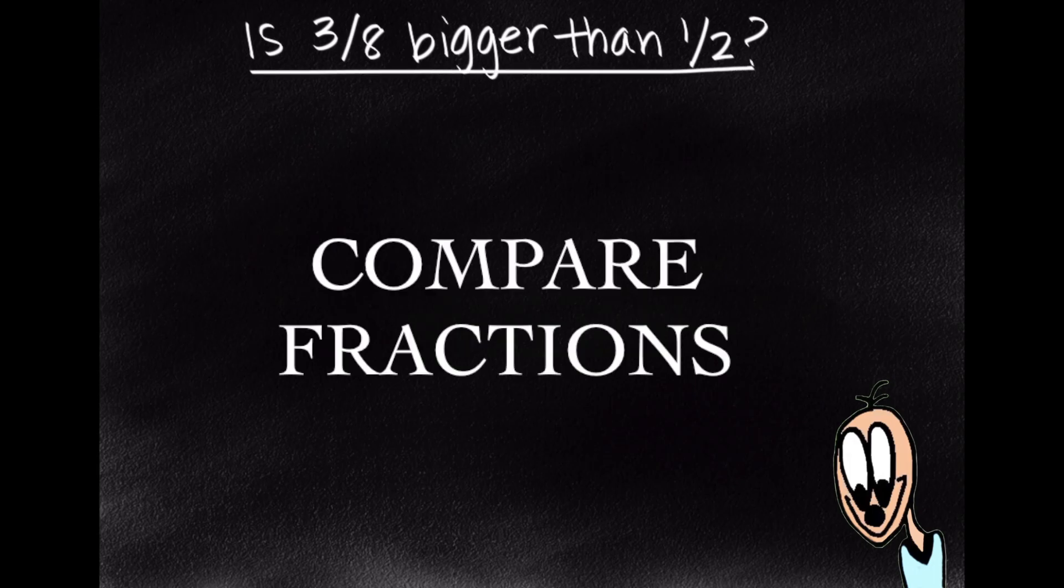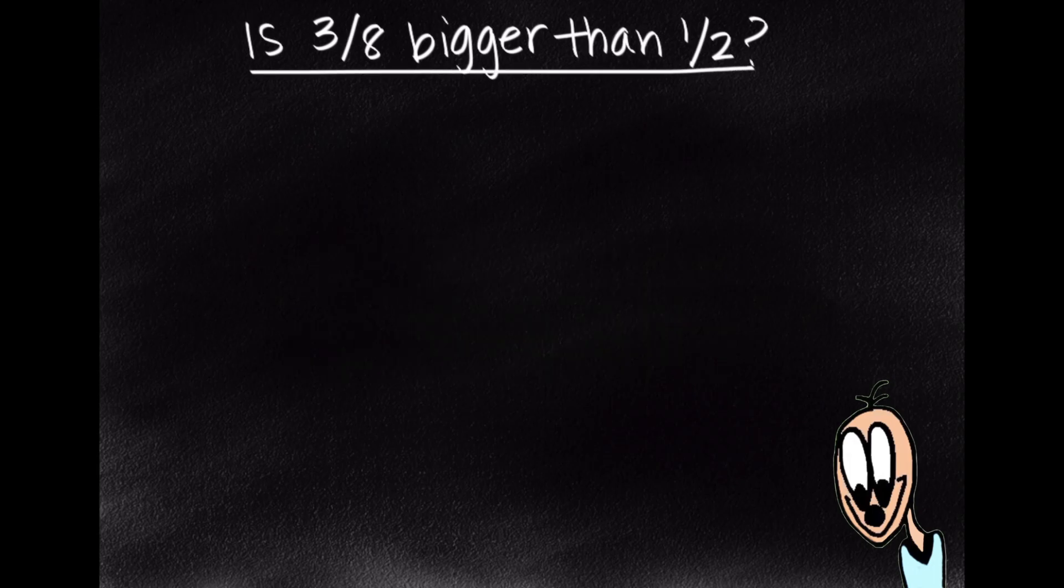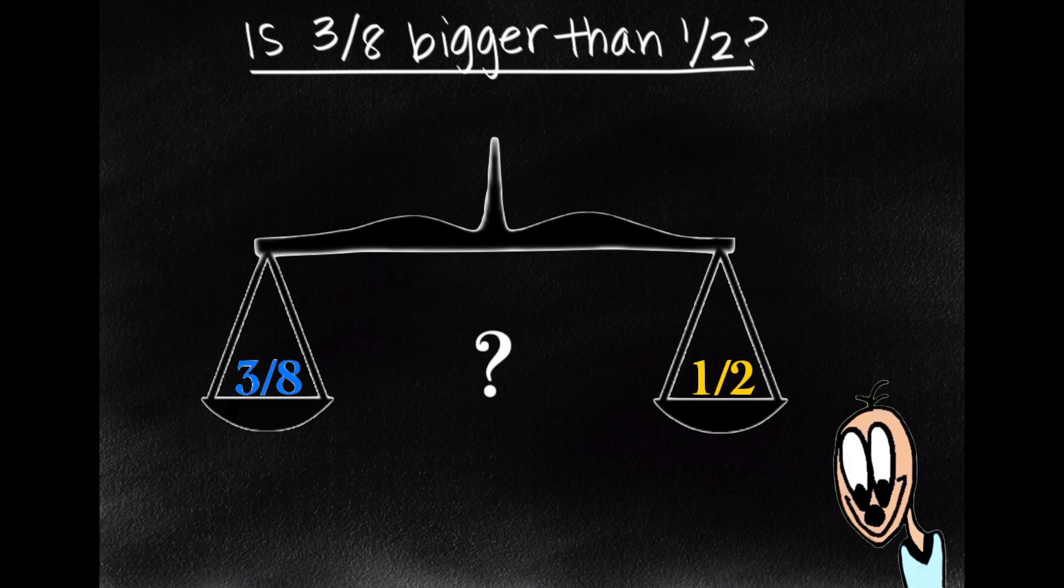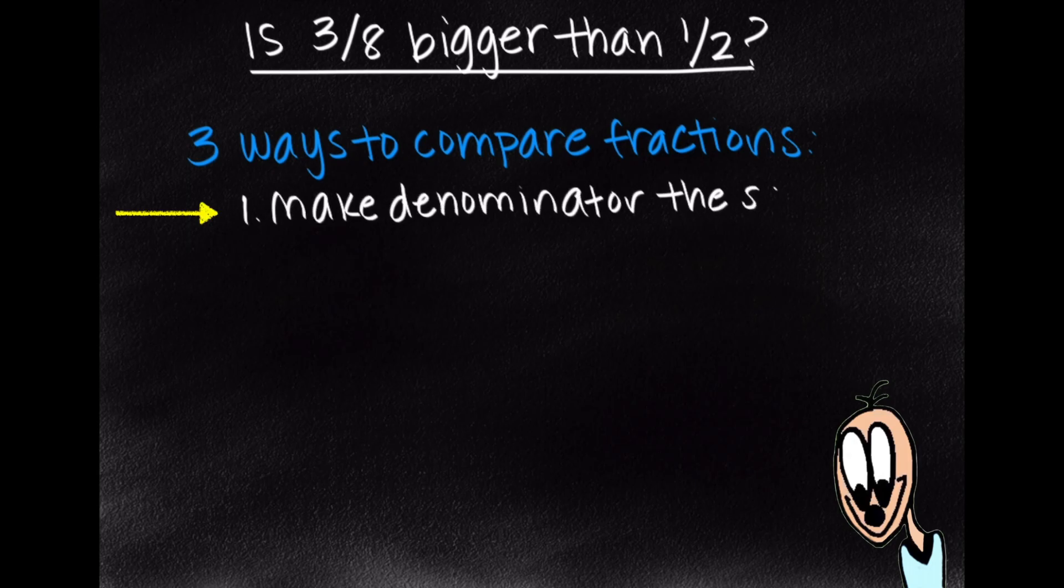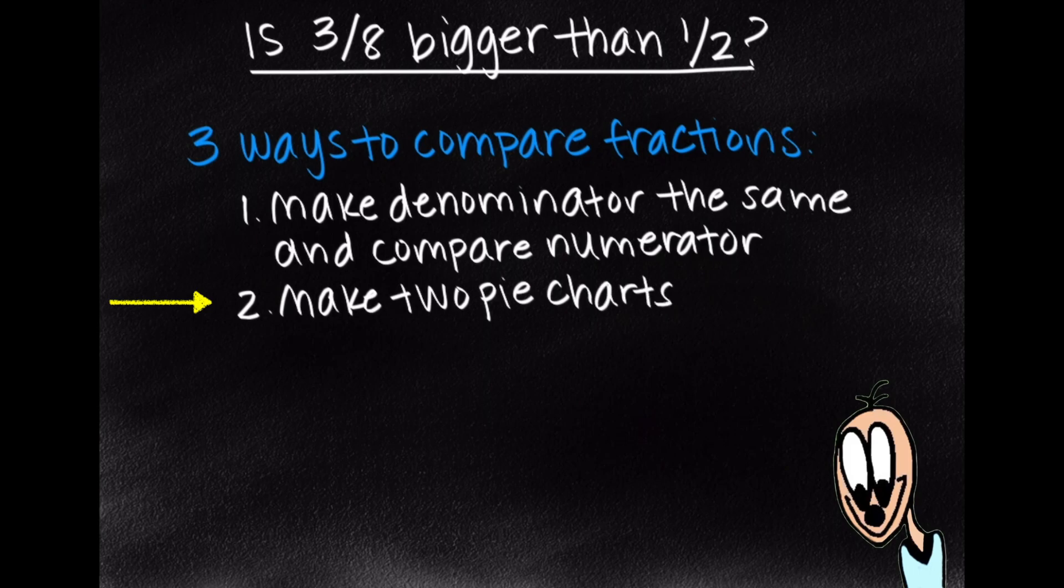And we're going to be going through three ways to compare fractions that will help us understand whether 3 eighths is bigger than 1 half. So let's just start with an overview of the three ways to compare fractions. The first is to make the denominators the same and then compare the numerators. The second is to make two pie charts and compare them visually. And the third is to divide the numerators by the denominators and compare the decimals.